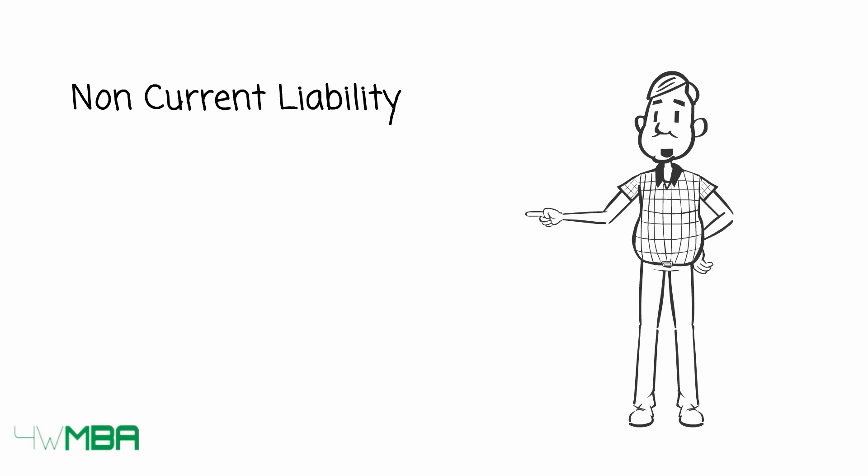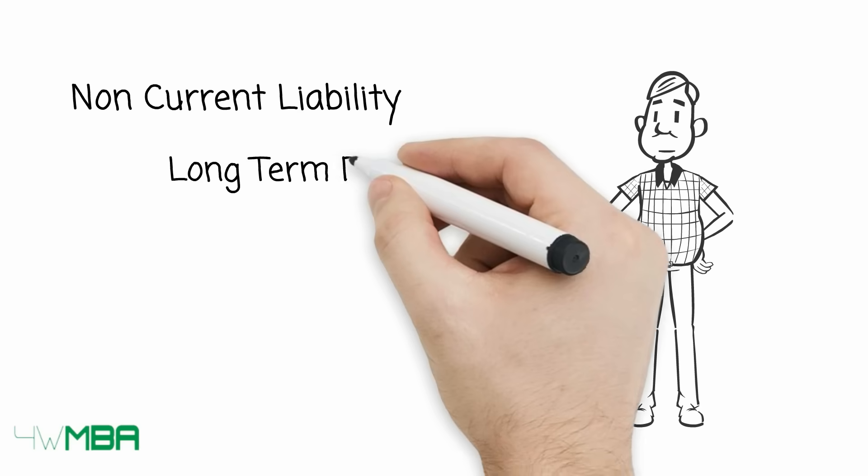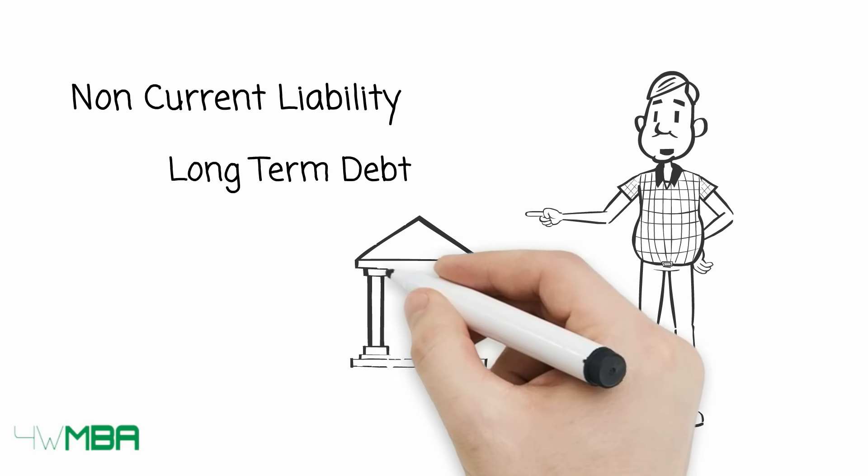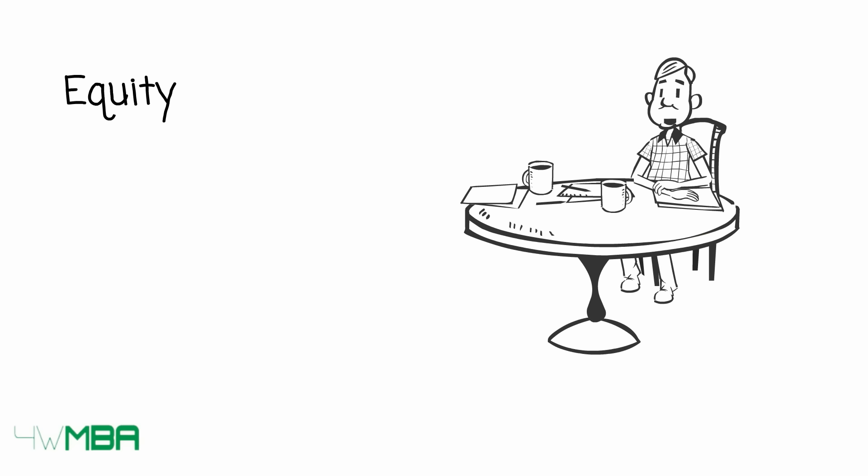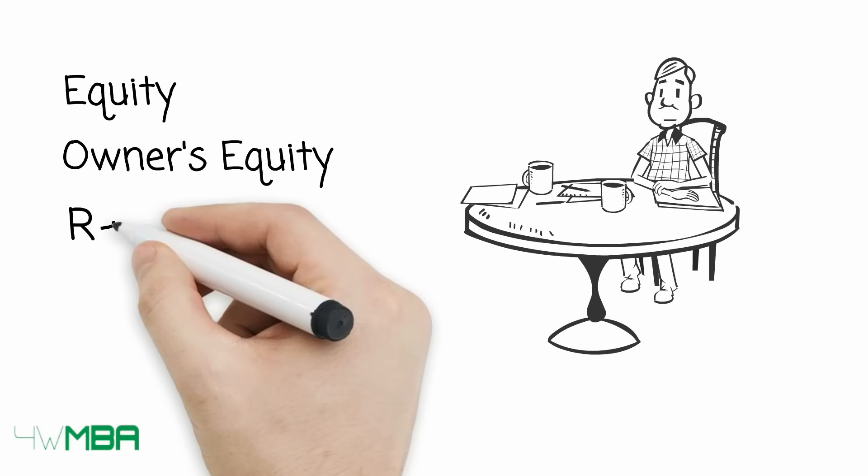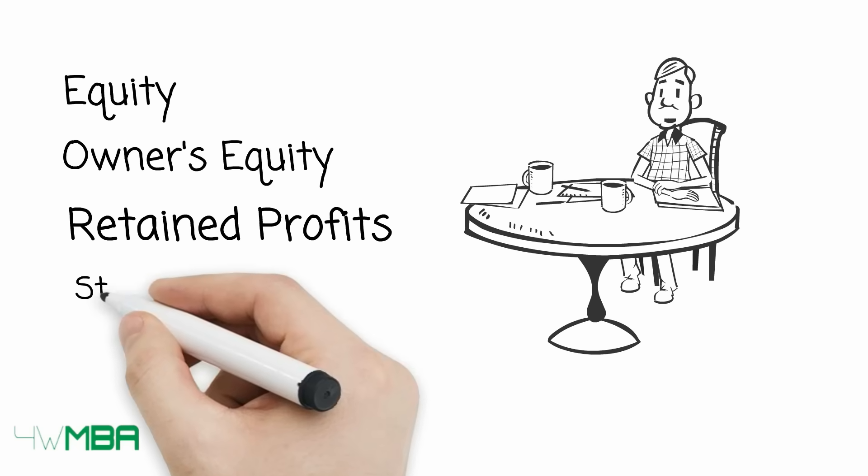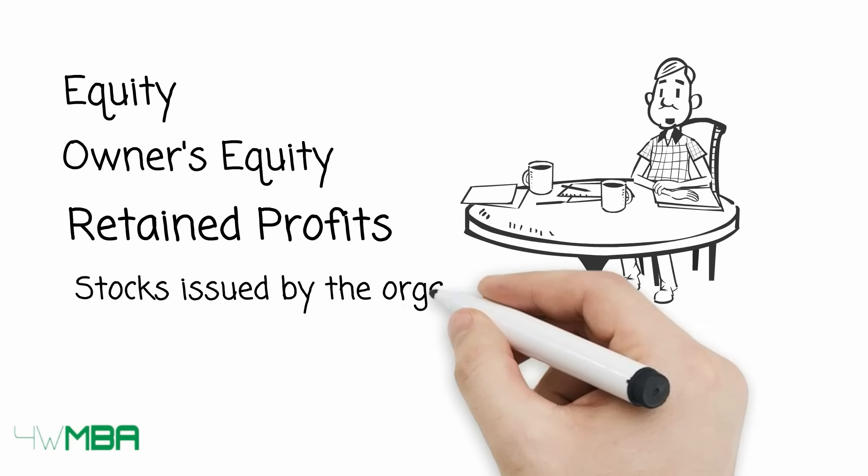The main non-current liability is long-term debt, such as loans contracted with the bank. Then the equity. In this subsection are reported items such as owner's equity, retained profits, and other kinds of stocks issued by the organization.